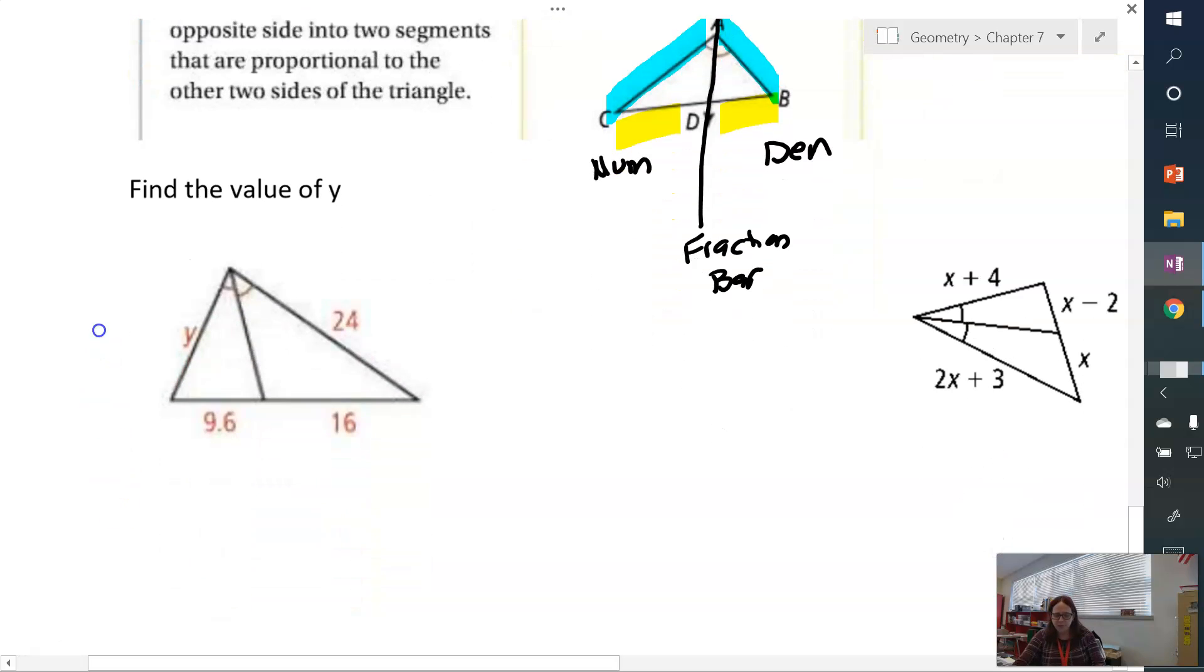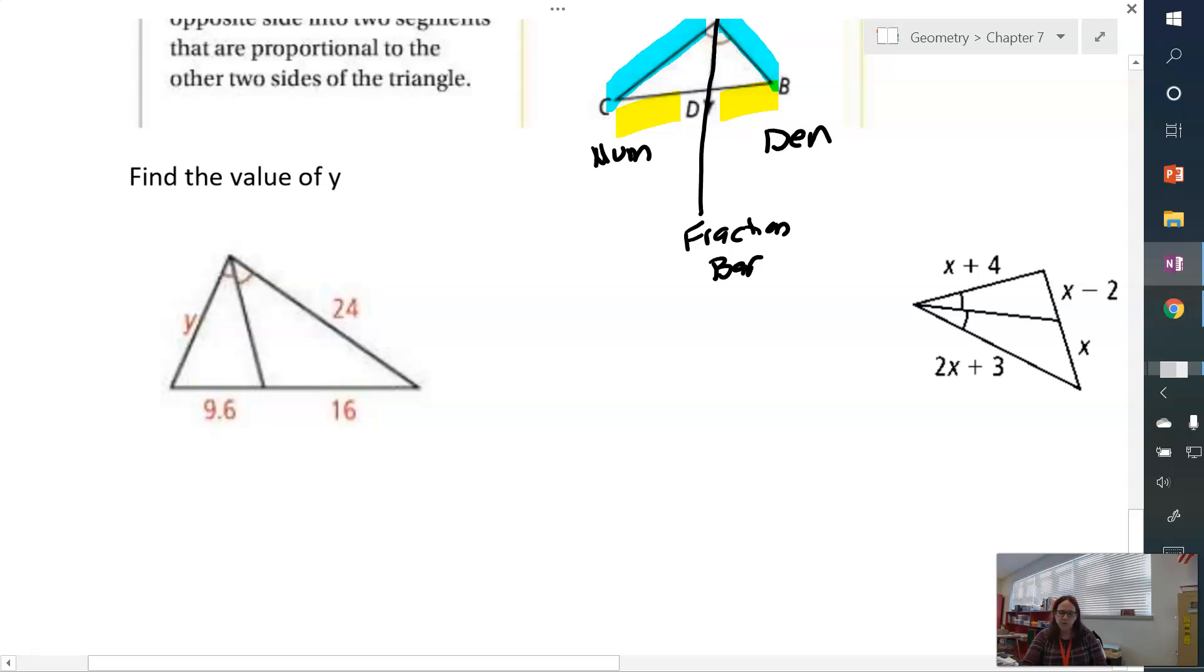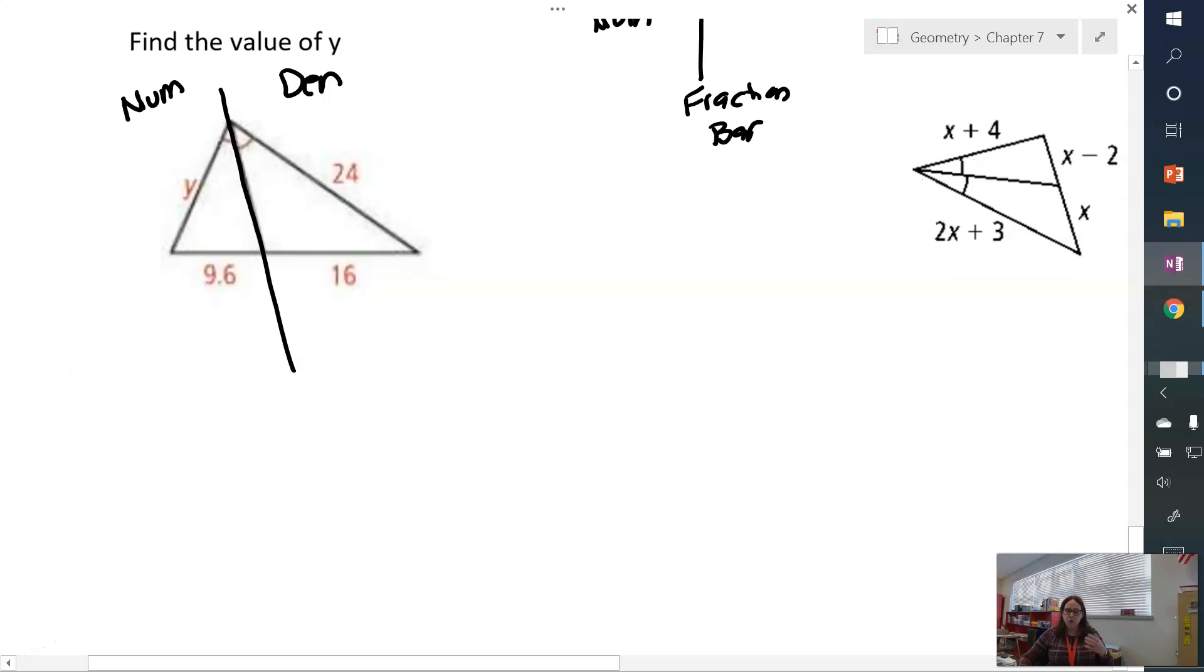That's the easiest way I've found to remember this. So, for this first triangle, we're going to find the value of Y. So, extend this out, and then just pick one side to be your numerator, and the other side to be your denominator. I like to go like this. I like to do the numerator on the left and the denominator on the right. So, numerator Y over 24. Because they're next to each other. They touch each other. Equals 9.6 over 16. Because those two are next to each other.